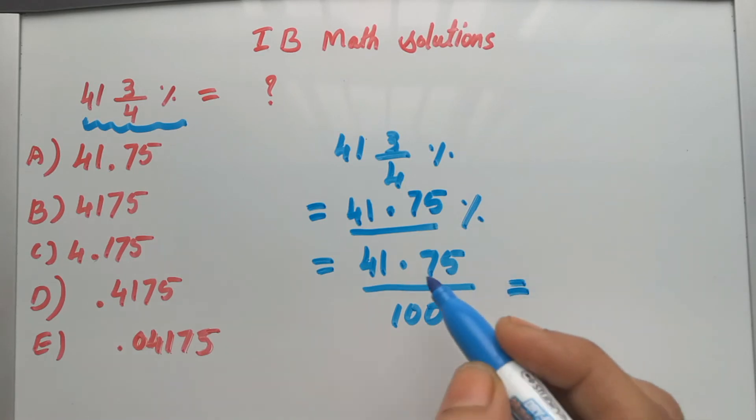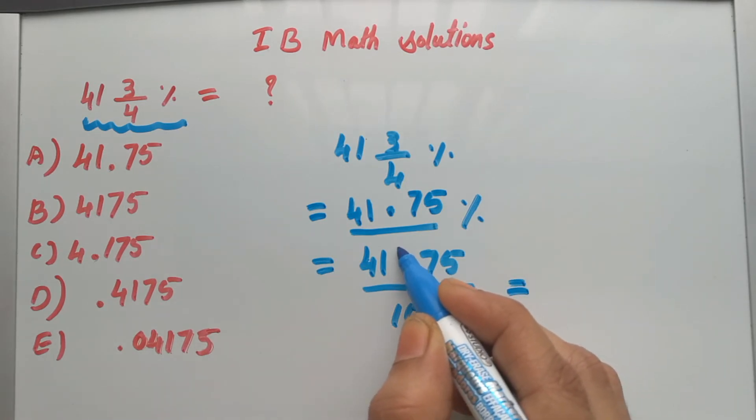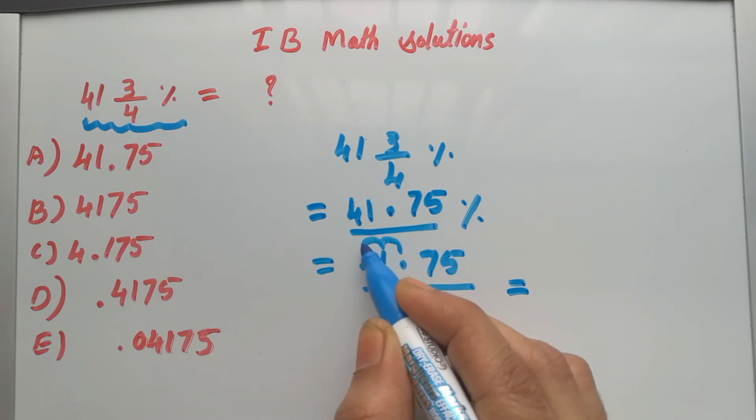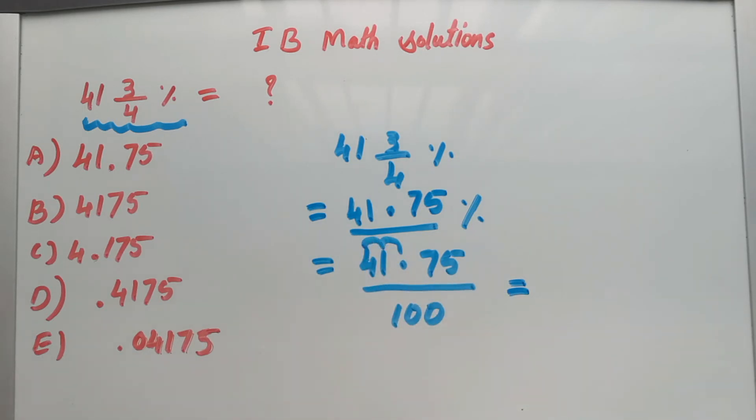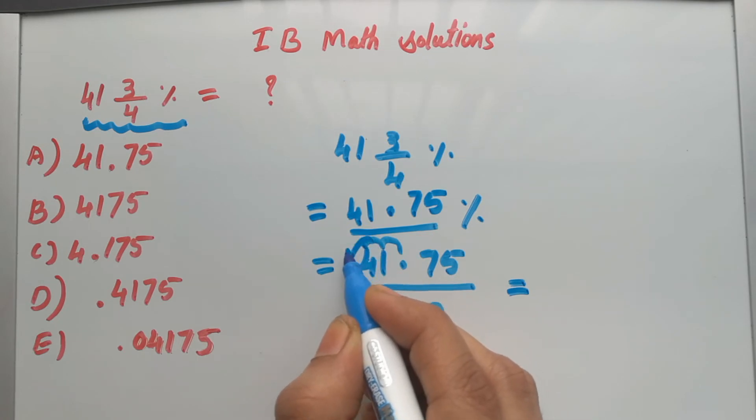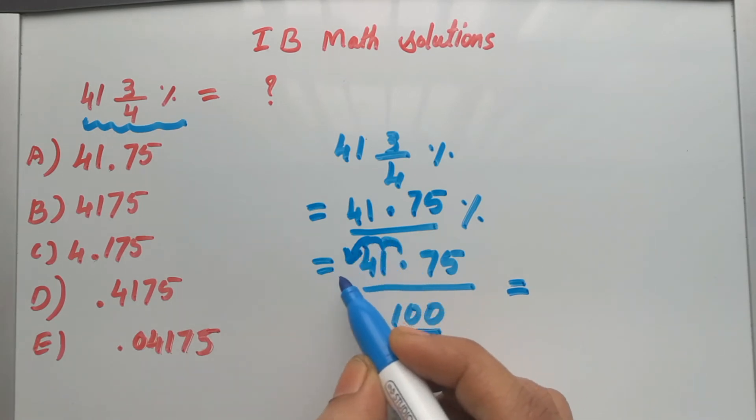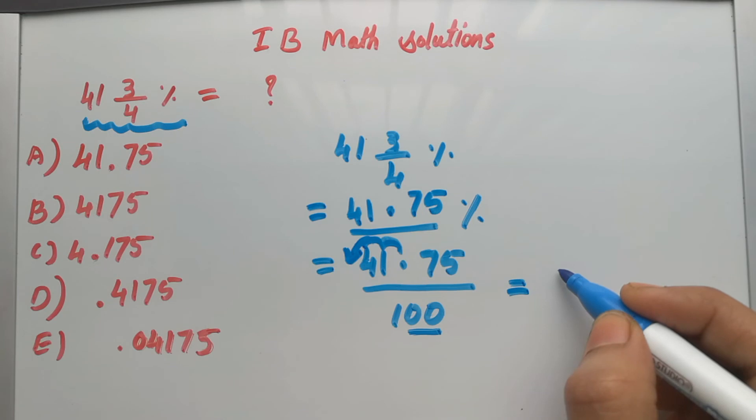You have to move this decimal point to the left side, right to left. So this decimal point comes to two numbers left. Your two zeros are there, so two numbers left. That means 0.4175.